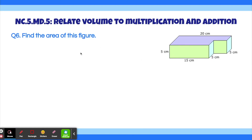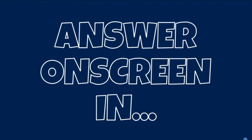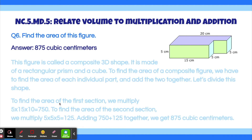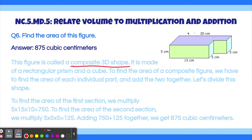Question 7. Find the area of this figure. The answer to this problem is 875 cubic centimeters. This figure is called a composite 3D shape. It is made up of a rectangular prism and a cube. A composite 3D shape is when it's not just one shape — it's two or more. To find the area of a composite figure, the easiest way is to find the area of each individual part and then add the two of them together.